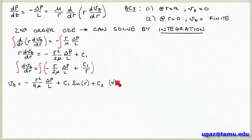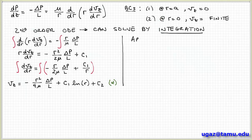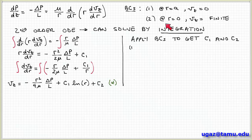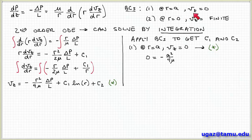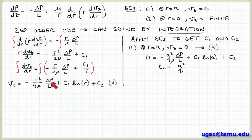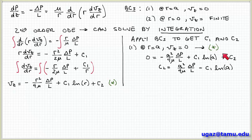I've obtained the solution but I need to evaluate the integration constants by applying the boundary conditions. The first boundary condition is at the outer wall: at r equals a, the velocity goes to zero — the no-slip condition. Substituting into equation star: vz equals zero and r equals a, so zero equals minus a squared over 4mu times delta p over L plus c1 times natural log of a plus c2. Solving for c2: c2 equals a squared over 4mu times delta p over L minus c1 times natural log of a.